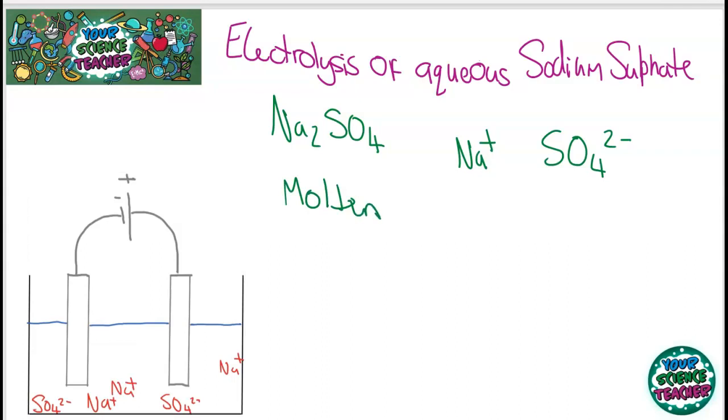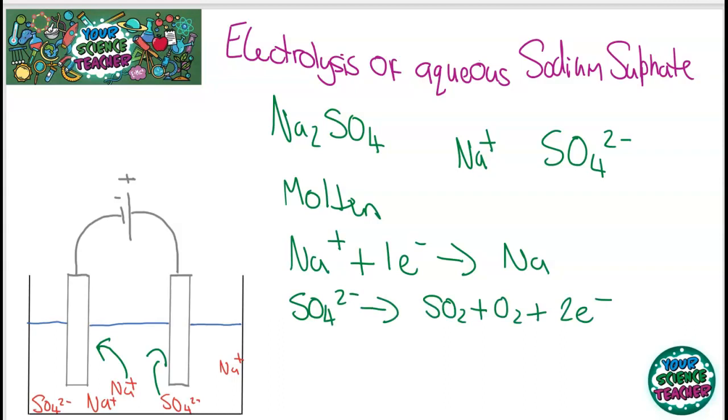They're going to move towards my cathode. And at the cathode, what's going to happen is reduction. So my Na+ is going to be reduced. It's going to gain one electron and become sodium. And my sulfate is going to go towards my anode from SO42-. You'd actually produce a bit of sulfur dioxide and oxygen.